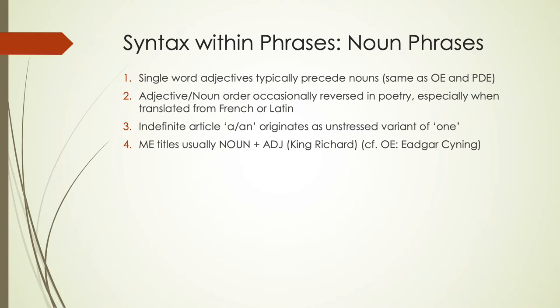Titles in Middle English are usually noun and adjective, similar to what we see today — so 'King Richard' would be something you'd typically find. But in Old English, we often saw the reverse, so 'Edgar Cyning' would have 'King' after the name. This is something that we start seeing changing and becoming more similar to present-day English.